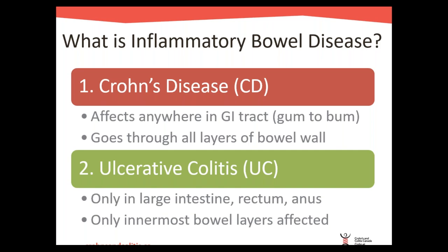With Crohn's disease, it can affect anywhere in the GI tract from mouth to anus, and the disease goes through all layers of the bowel wall. You can also have areas of healthy tissue and diseased tissue next to each other — it's very patchy. With ulcerative colitis, the disease starts from the anus and rectum and continuously works its way up through the large intestine. The disease is only in the large intestine, rectum, and anus, and only the innermost bowel layers are affected.